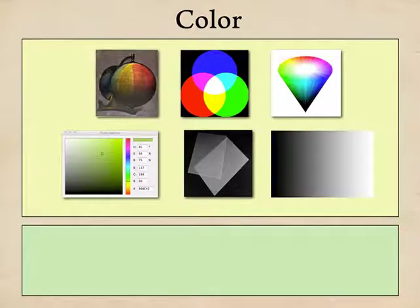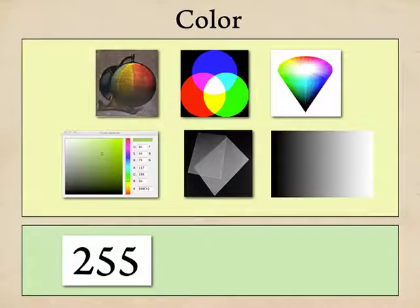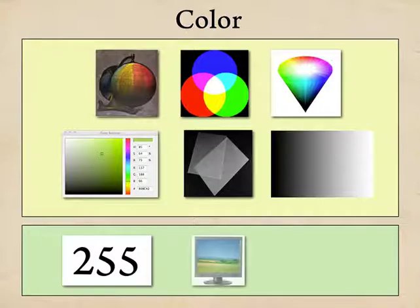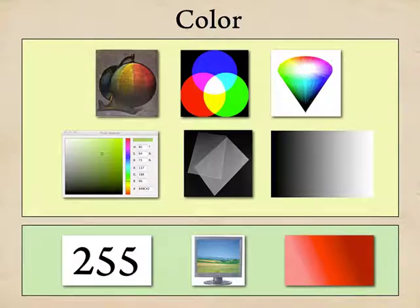There are three supplementary videos in this section. The first discusses the number 255 — when we talk about color, you'll see this number come up over and over again, so there's a video that explains it. There's also a video about the hardware of color displays, which will help you understand why Processing treats color the way it does. Finally, I'll talk about color blending — it turns out there are two different ways to blend colors within Processing, and you actually get two different kinds of results.